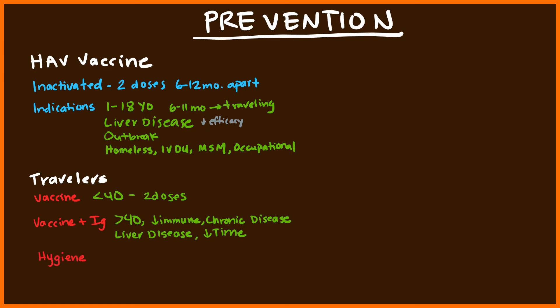Once at their destination, there are several hygiene steps travelers can take to reduce their risk of exposure. They should wash their hands frequently, avoid tap water and raw foods — taking bottled water and cooked food. They should also be aware that chlorine and iodine help kill the virus, which is a good way to clean things around them if they're concerned.